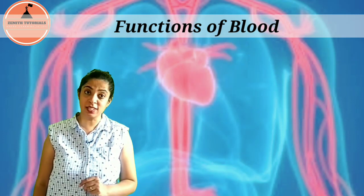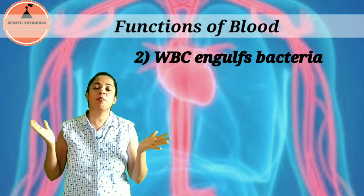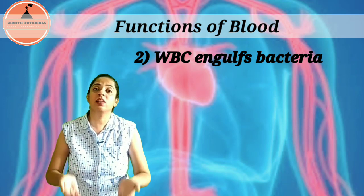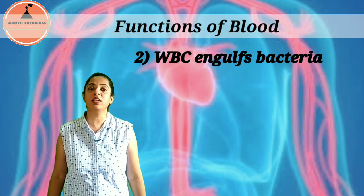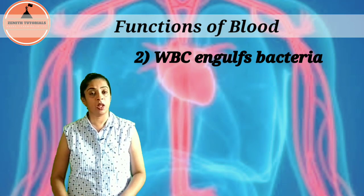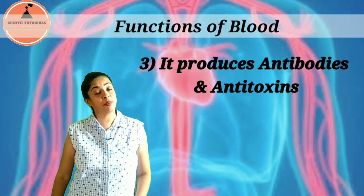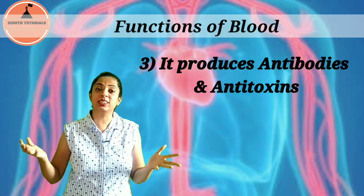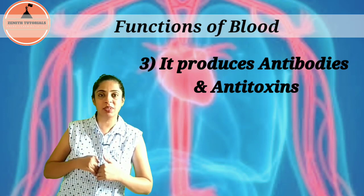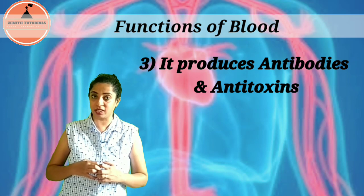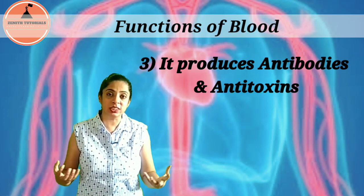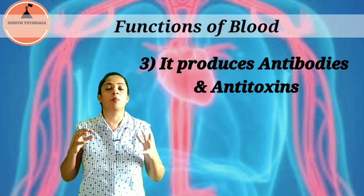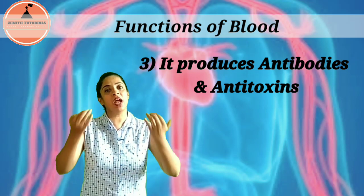The second protective function of blood is that its white blood corpuscles — WBCs, also called white blood cells — engulf bacteria and thereby protect our body from bacteria that may have entered. Third, blood produces antibodies and antitoxins. Antibodies protect us from any foreign organism or bacteria that enters the body and kills it, while antitoxins destroy toxic or poisonous substances that may enter our body.